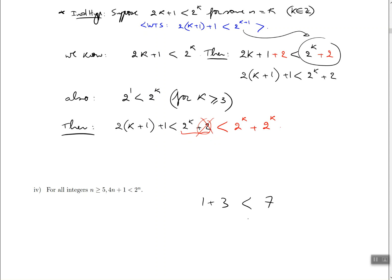If I had 1 plus 3 less than 7, I can go ahead and write down 1 plus 3 less than 7 plus 5 or 7 plus 9 or whatever. Whatever other number I want, as long as that number is bigger than 3, that would work. So 4 would work, 7, 10, whatever. So that's kind of the idea of what I'm doing right now. I'm replacing the 2 with a larger quantity, and so this is perfectly legit. So remove the 2, replace it with 2 to the k.